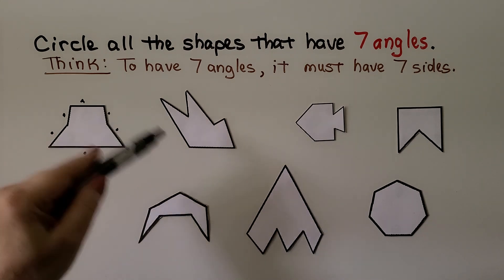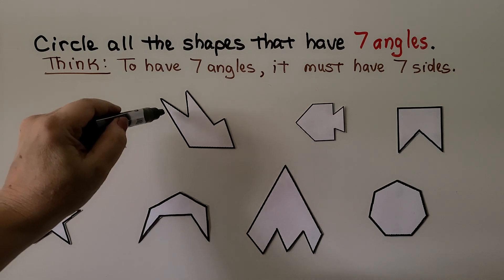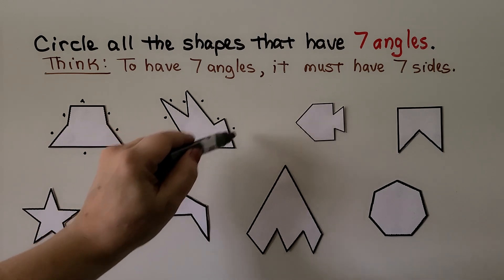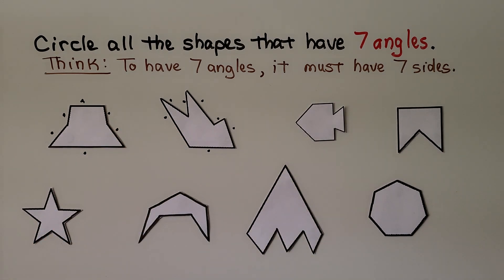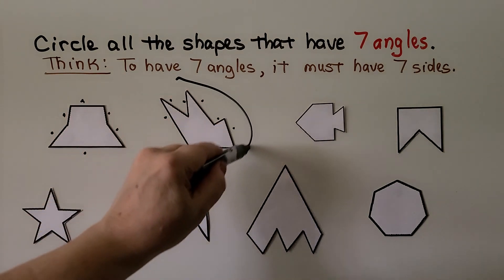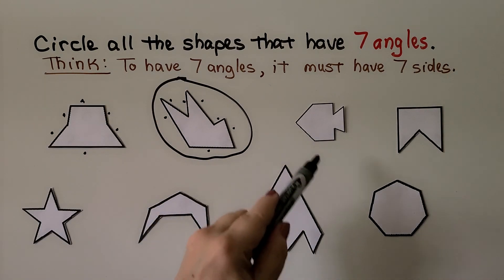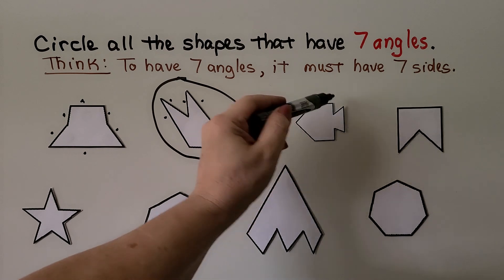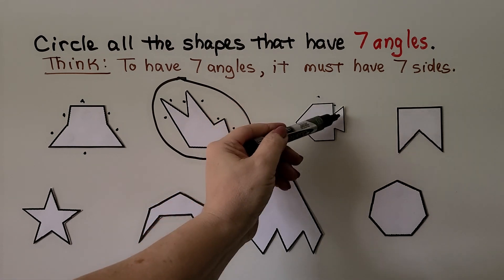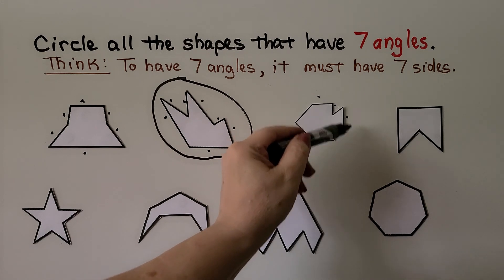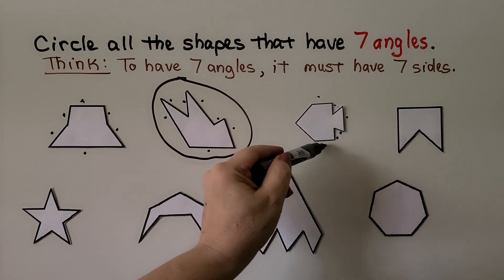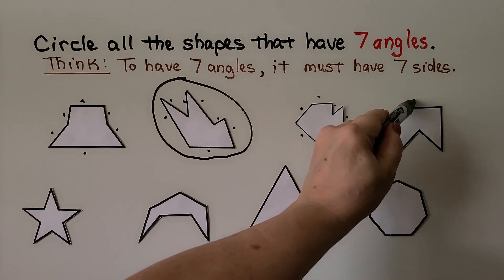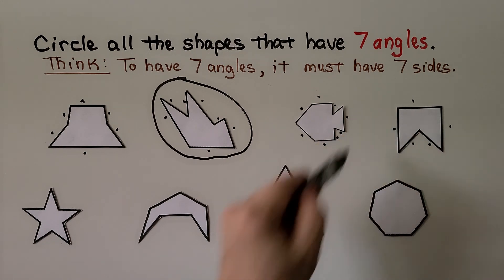Let's count this one — it's a very weird shape. We can start counting here: one, two, three, four, five, six, seven. That has seven sides, so it must have seven angles. Let's count this one — it kind of looks like a rocket ship. We have one, two, three, four, five, six, seven, eight, nine. That's got nine sides. Let's try this one — it's got one, two, three, four, five sides.